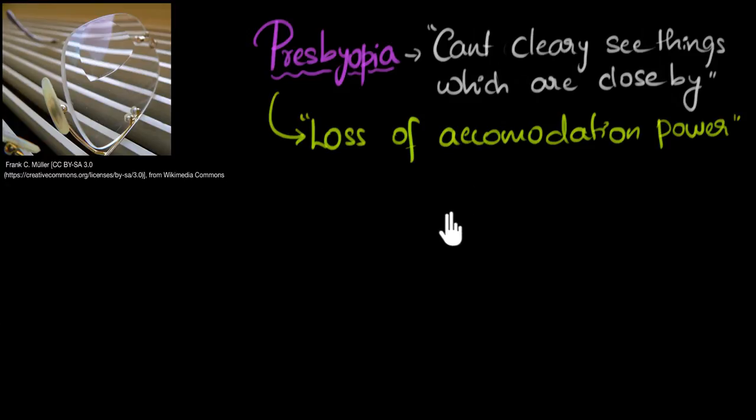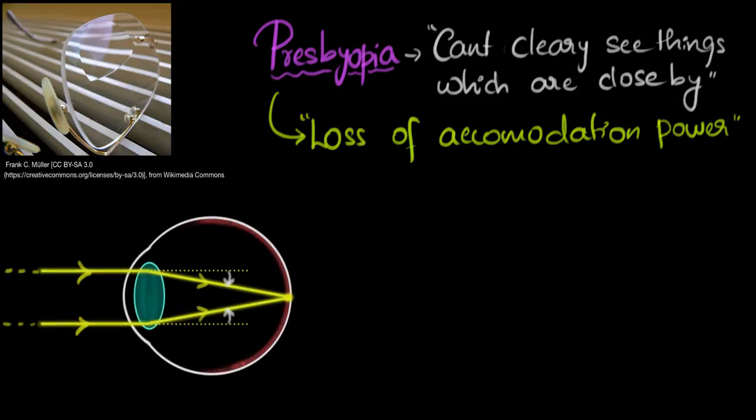Accommodation is where our eyes adjust their optical power depending upon the viewing distance. For example, if you're looking at things which are far away, the rays of light from that object would be pretty much parallel to each other, and now to focus them onto the retina, notice the bending required is pretty small. So, the optical power needed is pretty small, and as a result, our eyes will be relaxed.